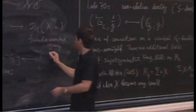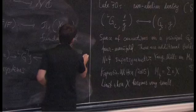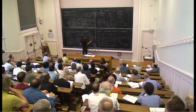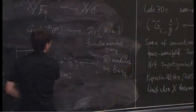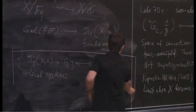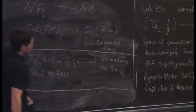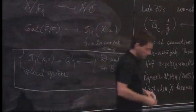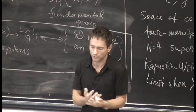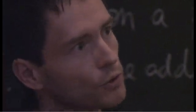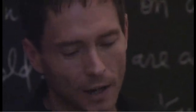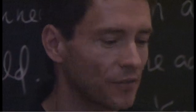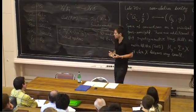But the end result is what's called D-modules — D-modules on Bun_G. What are D-modules? Take a vector bundle with a flat connection. You can multiply sections by a function, and you can also differentiate the section by a vector field using the connection. So a D-module is a fancy name for a generalization of a vector bundle with a flat connection.